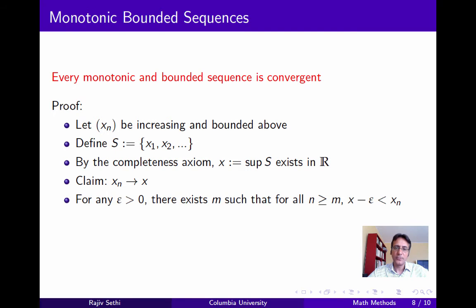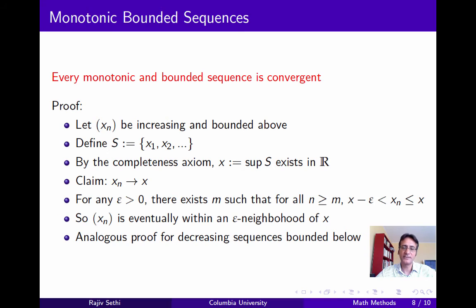For any epsilon positive, there must eventually be a term xm above x minus epsilon — if not, x minus epsilon would be an upper bound for S, contradicting x being the least upper bound. Since the sequence is increasing, every term after xm is also larger than x minus epsilon. Furthermore, every term is at most x, since x is an upper bound for S. This proves xn is eventually within an epsilon neighborhood of x for any epsilon positive, so xn converges to x. A proof for decreasing sequences follows the same structure.